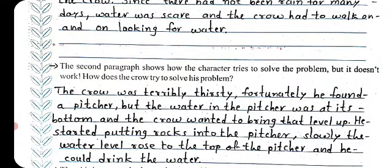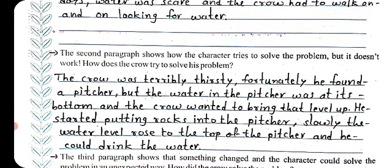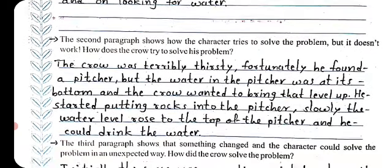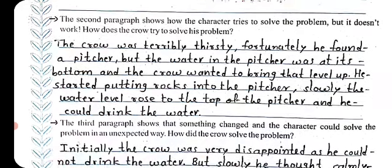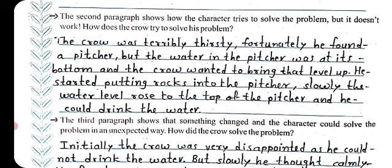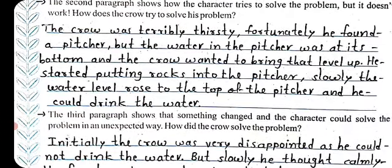Let's see the second question. The second paragraph shows how the character tries to solve the problem but it doesn't work. How does the crow try to solve his problem? The crow was terribly thirsty. Fortunately he found a pitcher, but the water in the pitcher was at its bottom and the crow wanted to bring that level up. He started putting rocks into the pitcher, and one by one, slowly, the water level rose to the top of the pitcher and he could drink the water.